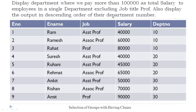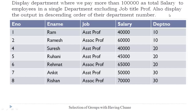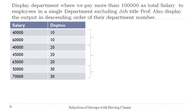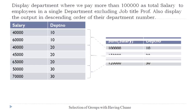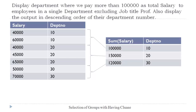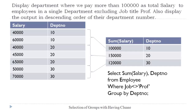The first step is to exclude the undesirable records of job title 'professor' before making the groups. In order to select desired records from the database we have to use the WHERE clause. After selecting these desired records, grouping will be performed on the department number field. Three groups will be formed for department numbers 10, 20, and 30, and total salary will be computed for each group. The query up to this point is: SELECT SUM(salary), department_number FROM employee WHERE job != 'professor' GROUP BY department_number.